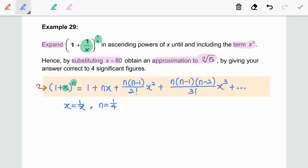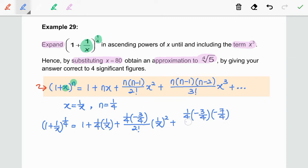Now, let us substitute x and n into the binomial formula. We are going to stop here because the question mentions x is until and including the term x^3. Now, let us simplify this expression.